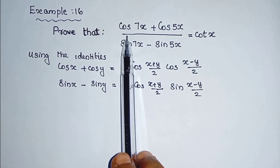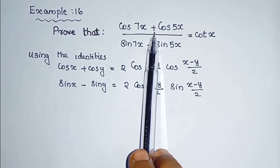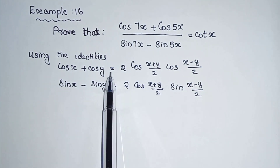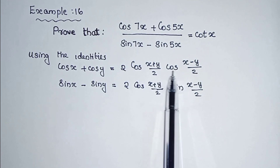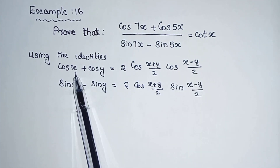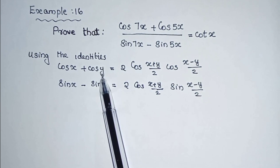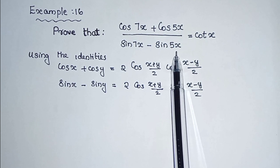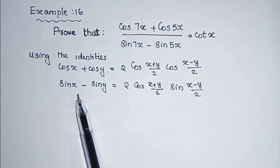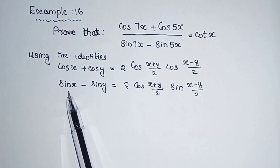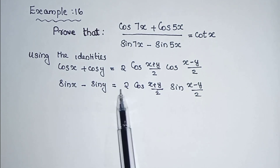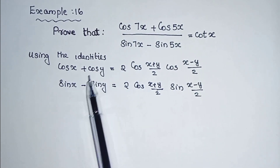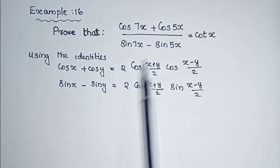Here, the numerator is cos 7x plus cos 5x. We can use the identity: cos x plus cos y equals 2 cos((x+y)/2) cos((x-y)/2), where x is 7x and y is 5x. For the denominator, sin 7x minus sin 5x, we use: sin x minus sin y equals 2 cos((x+y)/2) sin((x-y)/2), where again x is 7x and y is 5x.